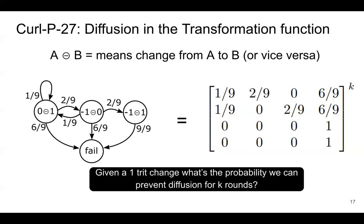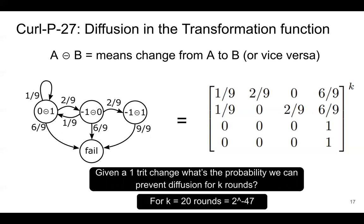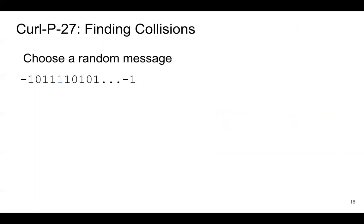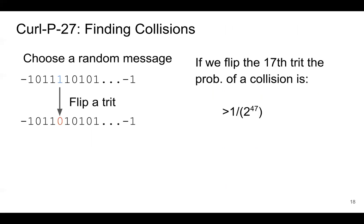We can take this state machine and turn it into a matrix to calculate the probability that for K rounds no diffusion will occur. Given a one-trit change at the beginning, what's the probability we can prevent diffusion for K rounds? We want K to be 20 or higher. For K equals zero rounds, it's 2 to the minus 47. So basically, using this attack, we have 47 bits of collision resistance in curlP27. Note that no diffusion for 20 rounds results in a collision.